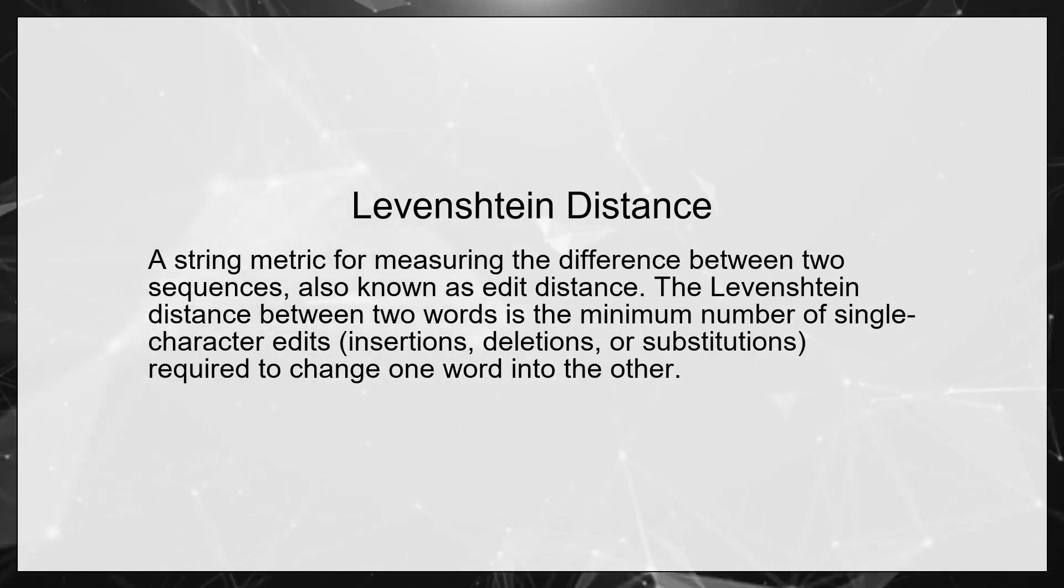Levenshtein Distance, a string metric for measuring the difference between two sequences, also known as edit distance. The Levenshtein distance between two words is the minimum number of single-character edits, insertions, deletions, or substitutions, required to change one word into the other.